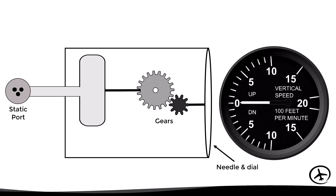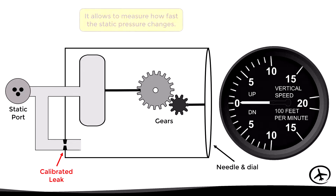A second static line is connected to the instrument case; however, it incorporates a calibrated leak which causes the pressure changes in the instrument case to be more gradual. This way it is possible to measure how fast the static pressure is changing.